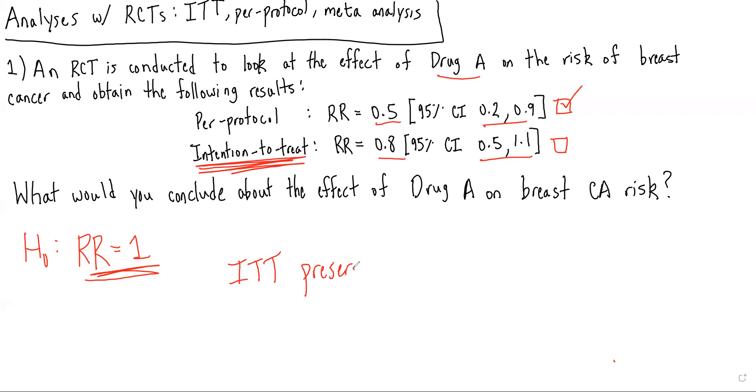Because we're comparing the groups as they were randomized, and by preserving the randomization, we benefit from the randomization and that confounders should be equally distributed between the two groups.